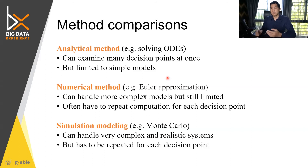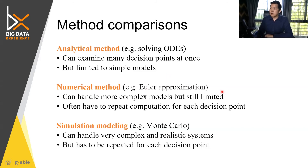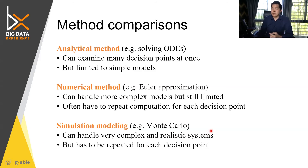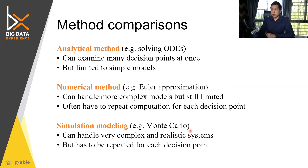Euler approximation can handle more complicated models, but it still has limitations and doesn't inherently include randomness. When you have something that is a lot more random and complex, there are many techniques with 'Monte Carlo' or 'Markov Chain' in front of them — all relating to randomness. What we are going to look at today is Monte Carlo simulation.